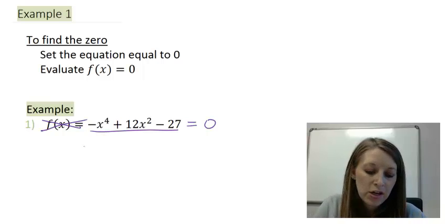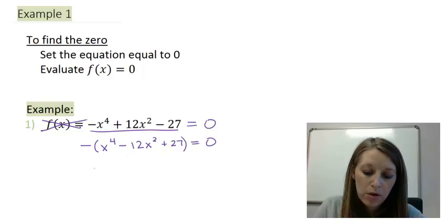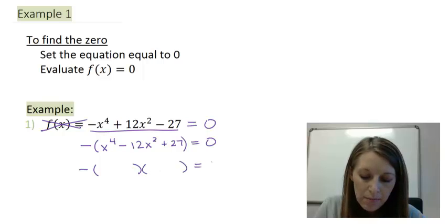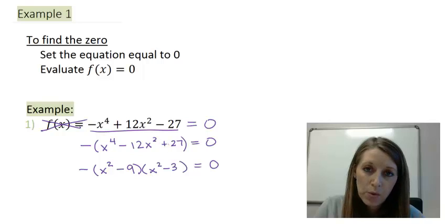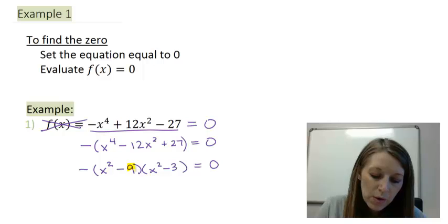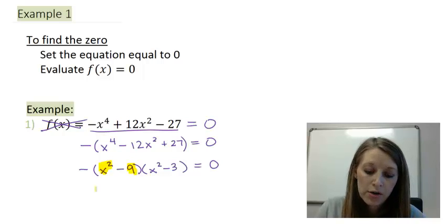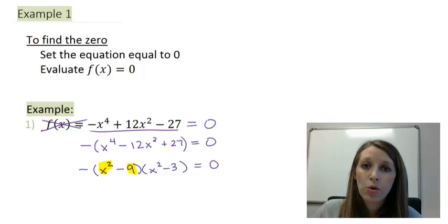First, I want to factor out a negative — that's going to make the rest of my factoring steps easier. Beyond that, I see I have three terms in this polynomial, so I will factor it using my trinomial method by setting up two parentheses. x² times x² gives me x⁴; 9 times 3 gives me 27; and −9 times −3 gives me positive 27, but −9 plus −3 gives me −12x². I can continue to factor one of these pieces because it's a difference of squares, but the other one I cannot factor further.